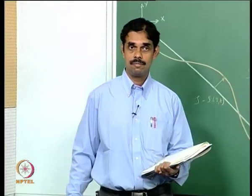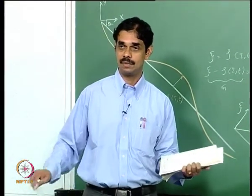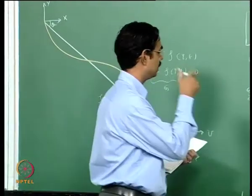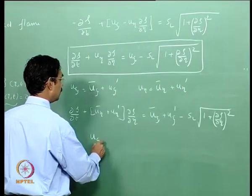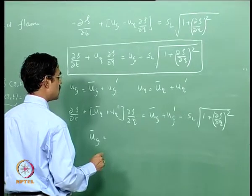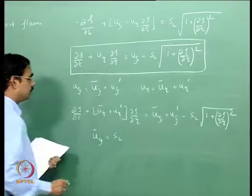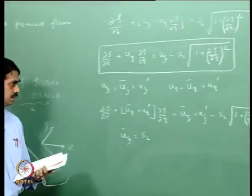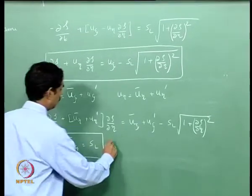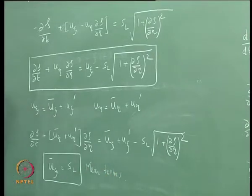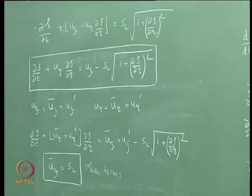We will write all the variables as a mean plus fluctuating quantity, then subtract out the mean part, look at the fluctuations, and linearize. This gives simple expressions which, being linear differential equations, we can very likely solve. So u_psi equals u_psi bar plus u_psi prime, and u_eta equals u_eta bar plus u_eta prime.